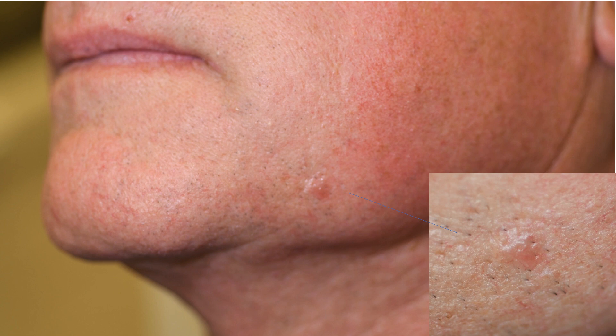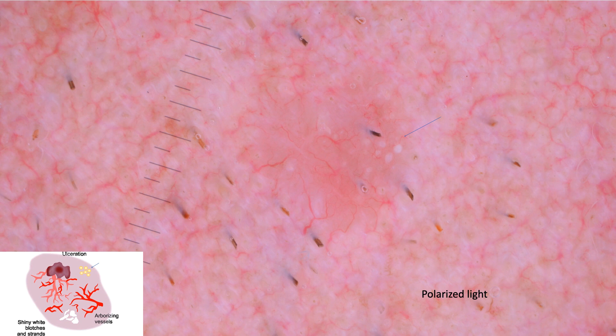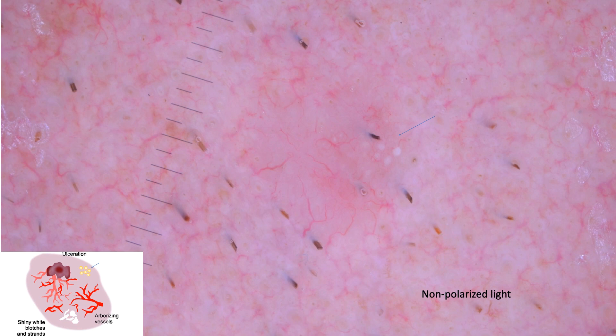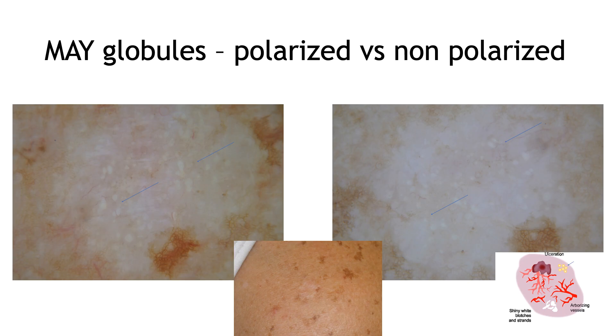Let's see this patient as an example. He presented with a pink papule on the left jawline. On dermoscopy you can see a pink background, arborizing vessels, and these white to yellow globules arranged in clusters, seen both in polarized and non-polarized light. This is another example of MAYG globules in a BCC on the shoulder — white to yellow globules arranged in clusters, visible in both polarized light on the left image and non-polarized light on the right.